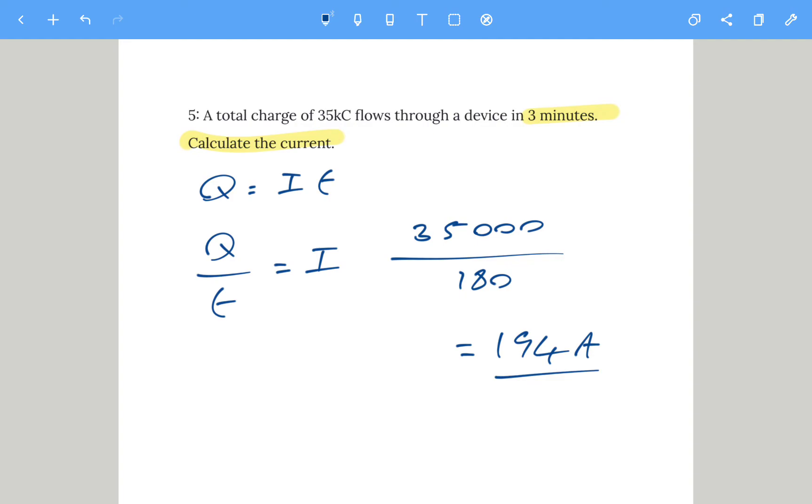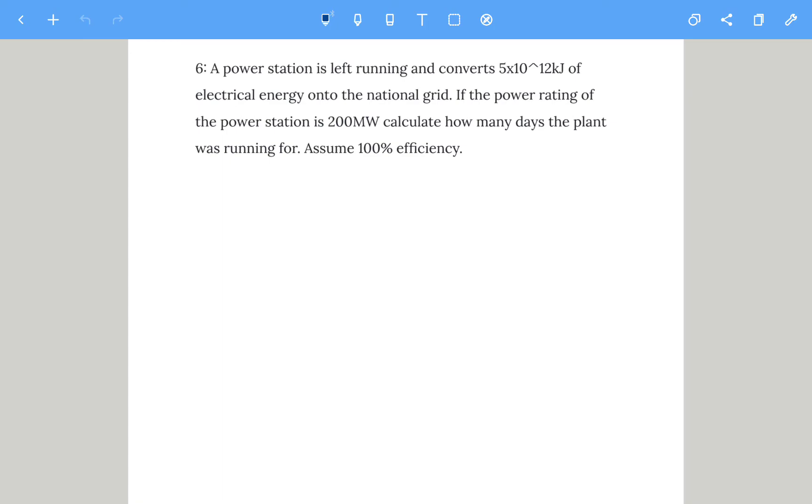Let's do an extension question now. Just as a recap before you start, that notation means 5 times 10 to the power of 12. A power station is left running and converts 5×10^12 kilojoules of electrical energy onto the national grid. If the power rating of the power station is 200 megawatts, calculate how many days the plant was running for, assuming 100% efficiency.